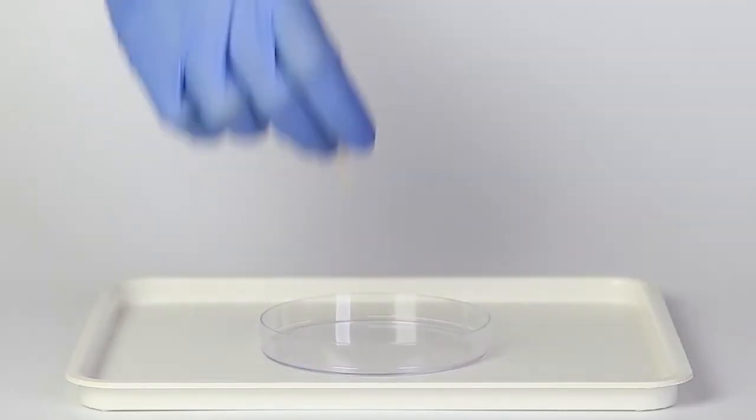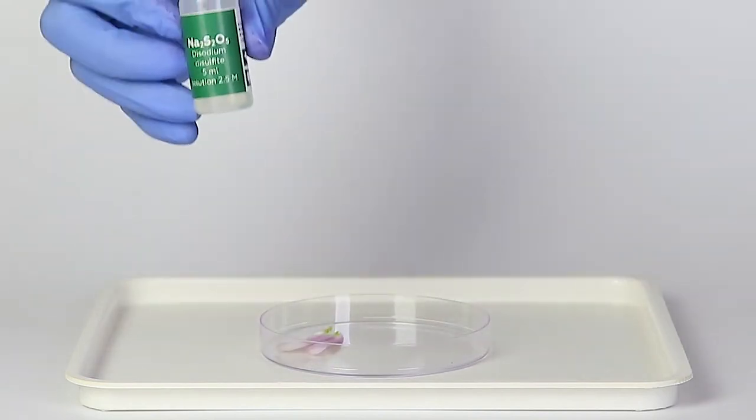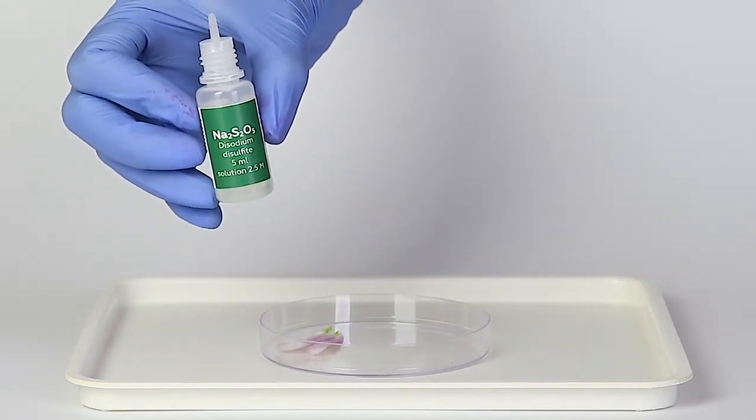Put some petals into the petri dish. Next, drip 10 to 15 drops of sodium pyrosulfite into the petri dish.